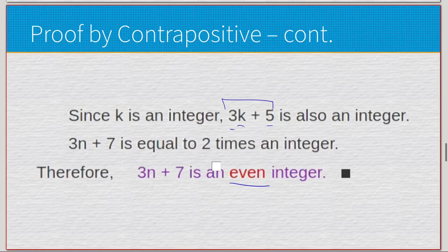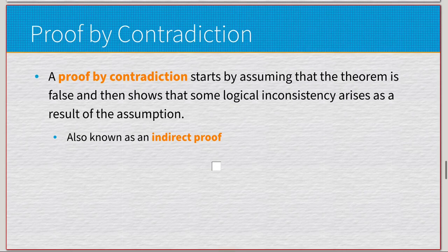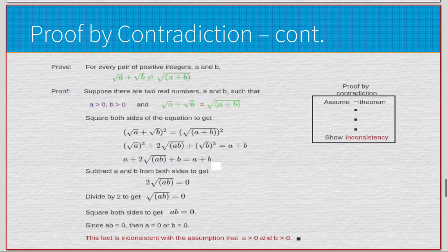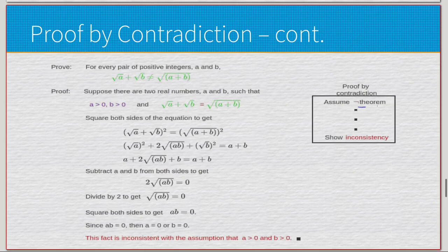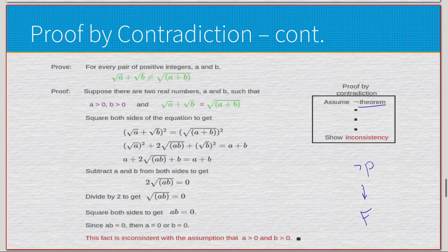Proof by contradiction is a bit different. You start by assuming that the theorem is false and show that some logical inconsistency arises as a result — this is also known as an indirect proof. Since going straight from the theorem to the conclusion may be very difficult, we assume the opposite of our hypothesis. If we start with negated P and reach a contradiction (false), that means the original P has to be true.